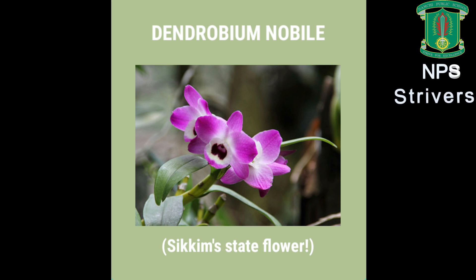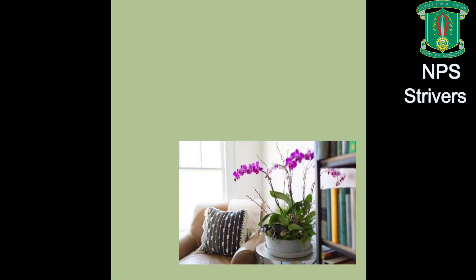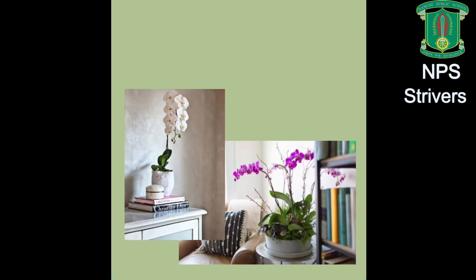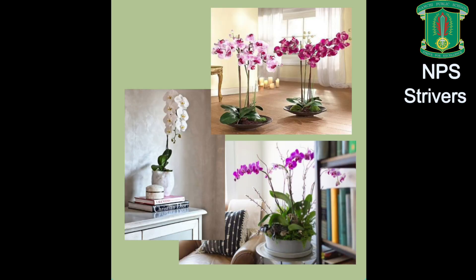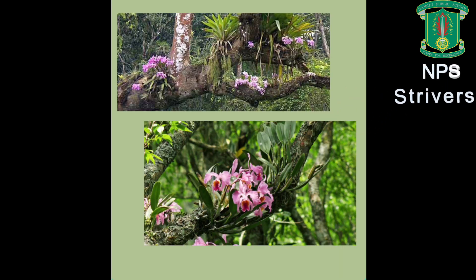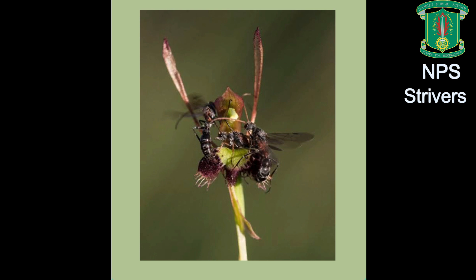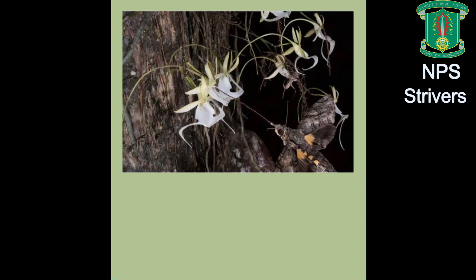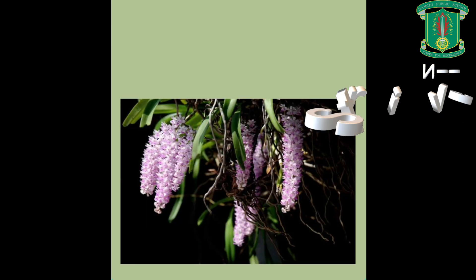Orchids are widely known for their aesthetics and ornamental beauty, but also play an important role in the ecosystem by attracting pollinators. Their presence signifies that the ecosystem is vibrant and lively.